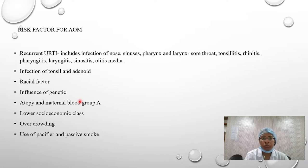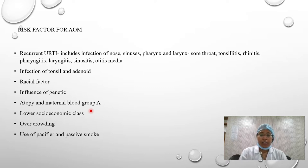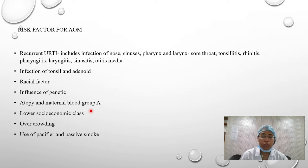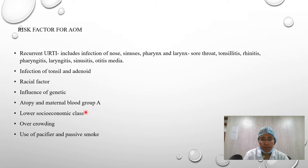Studies have found that mothers and children with blood group A are more prone to acute otitis media. Other contributing conditions include lower socioeconomic class, overcrowding, and use of a pacifier, all of which increase chances of AOM by facilitating spread of infection. The lower socioeconomic class is generally more prone to infection.